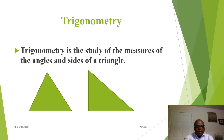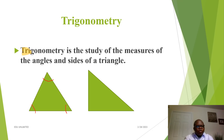One might ask the question: what is trigonometry? As we pull the marker, let us use the highlighter to highlight the prefix 'tri.' The prefix tri in the word trigonometry means three. So trigonometry is the study of the measures of the angles and sides of a triangle. Notice that a triangle has three sides and three angles — hence the term triangle, and hence the term trigonometry.